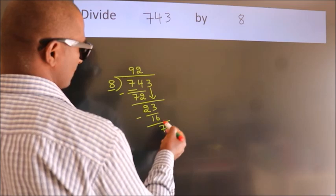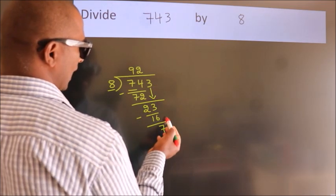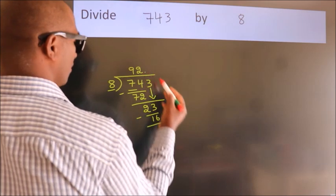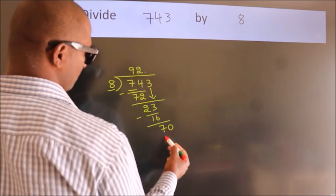After this, no more numbers to bring down. So what we do is, we put dot, take 0. So 70.